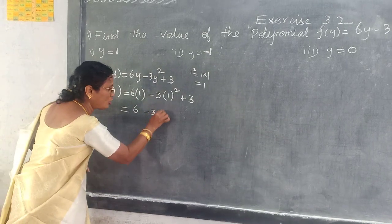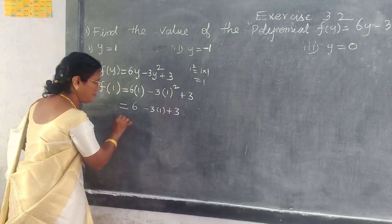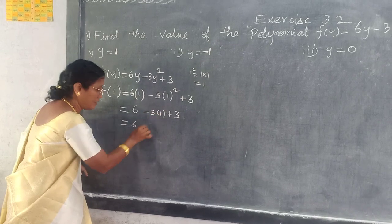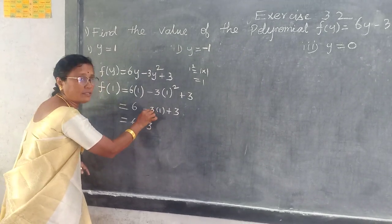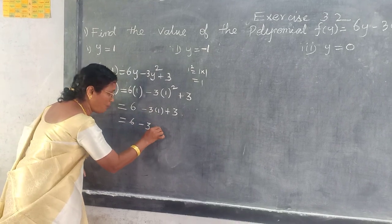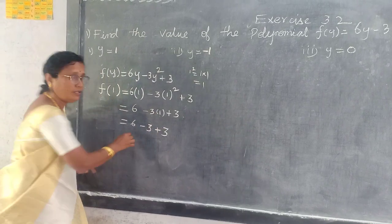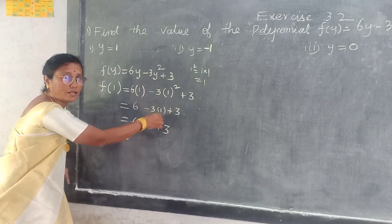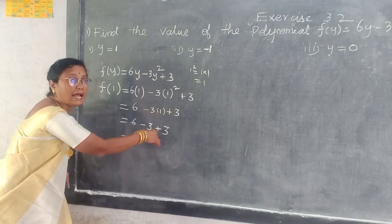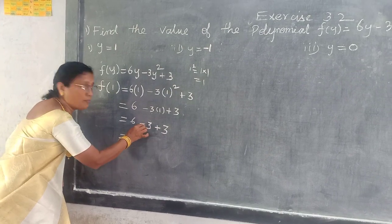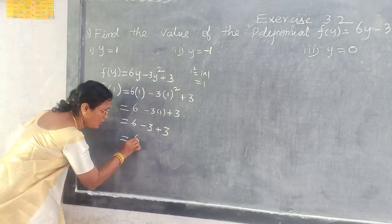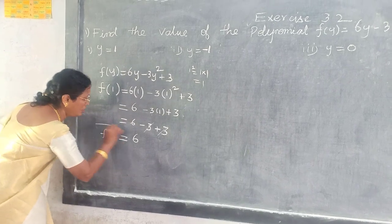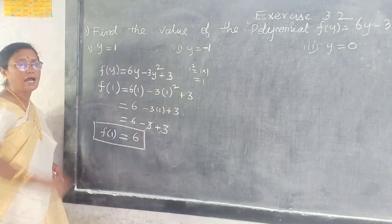So 3 into 1, plus 3. 6 minus 3 into 1 — what is it? 3. 1 times 3 is 3. So plus 3. Here this is plus 3, here minus 3. They will get cancelled. Plus 3 minus 3 will get cancelled. So what is the answer here? 6. So f of 1 equal to 6. This is the answer.